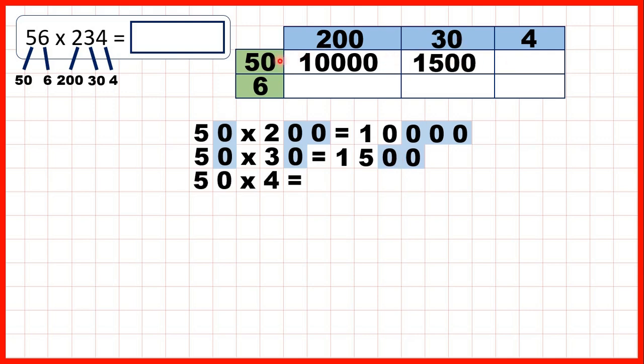Here we have 50 times 4. That's 200 because 5 times 4 is 20. But then after we've multiplied our non-zero digits, we need to put one end zero on the end.